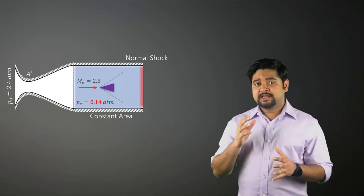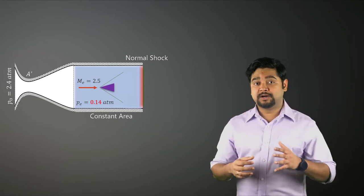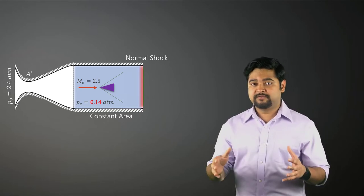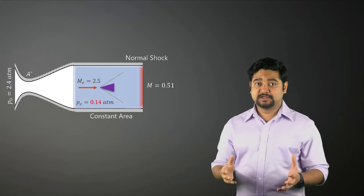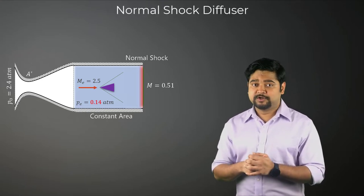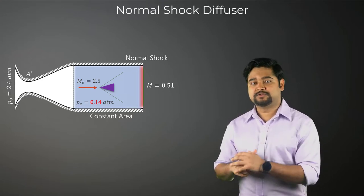the normal shock wave helps by slowing the air from Mach 2.5 to Mach 0.5 behind the shock. And as a result, this setup is also referred to as a normal shock diffuser.